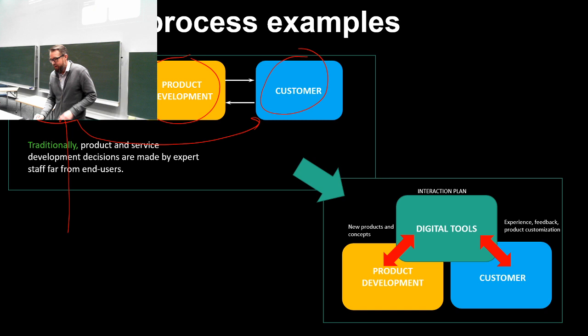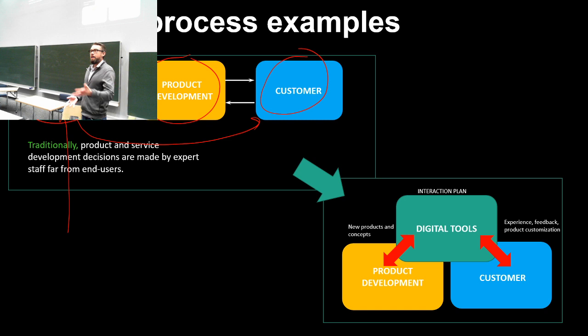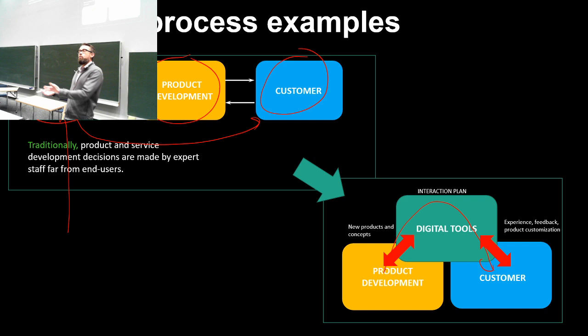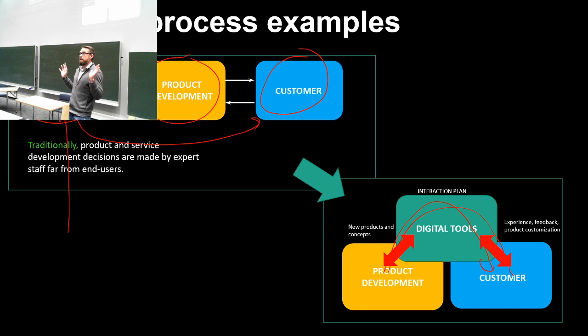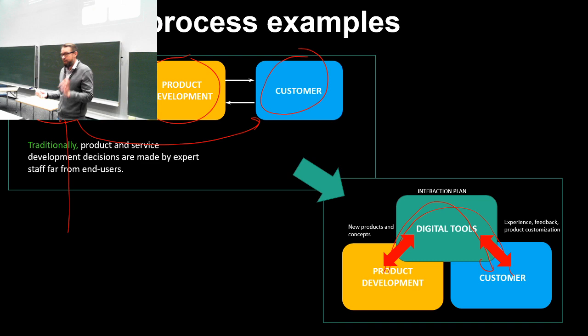A rough statement is that digital tools help us make wrong decisions faster — they speed up the process but don't necessarily help make the right kind of products. We believe we can take real-time simulation and build a bridge between product development and customers, launching new products via simulation and asking customers if that's what they want. Customers can also modify products to tell product development what they'd like.